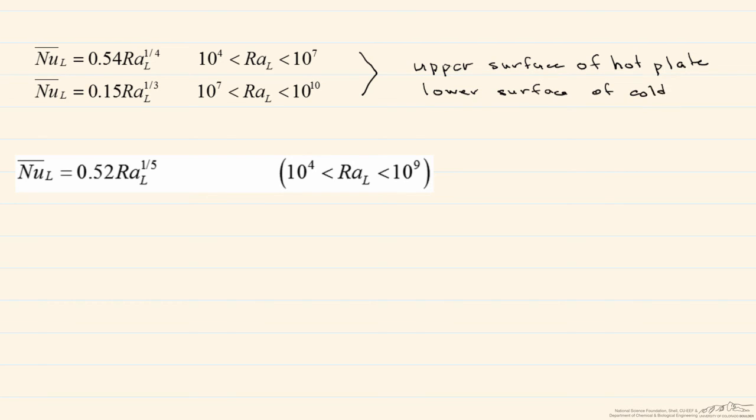And these are used for different values of the Rayleigh number. For the other two situations, you only have one correlation. So this is the lower surface now of the hot plate, or the upper surface of the cold plate.